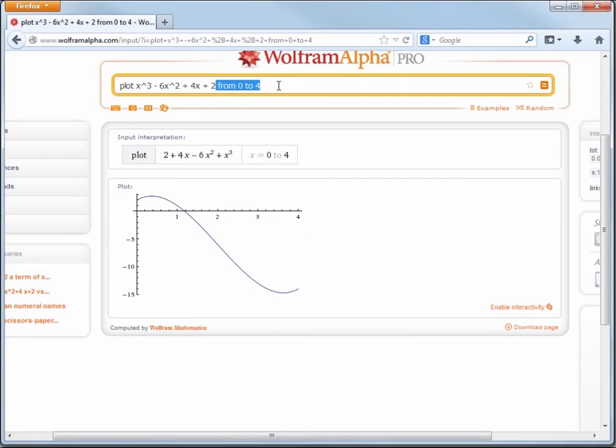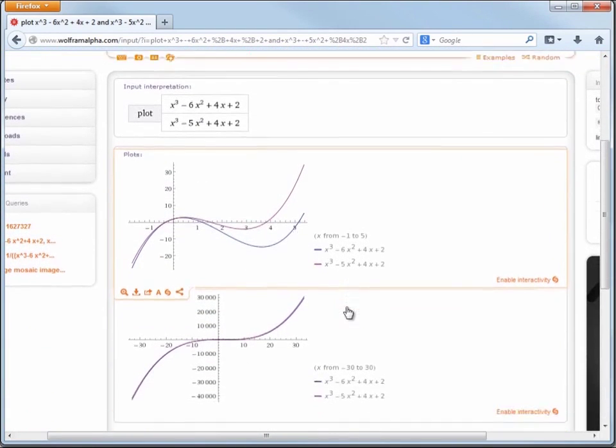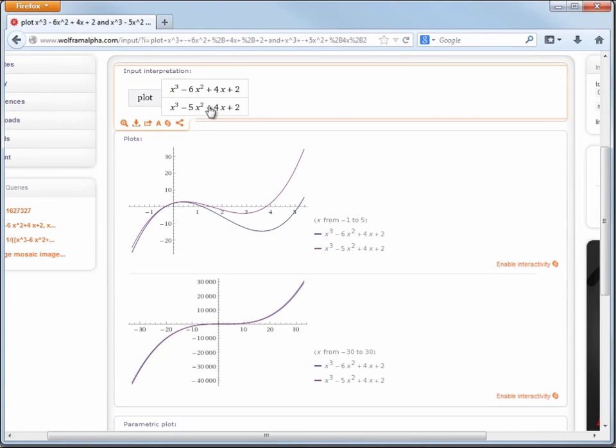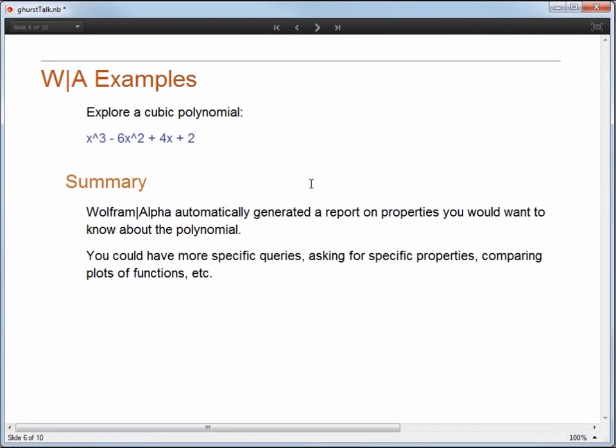Or let's say we wanted to compare the plots of two functions. So let's choose the same polynomial and a slightly modified one. We're going to change the quadratic term to minus five. Now we're provided with a plot of both. So now we can see if we modify this cubic polynomial by just a bit, how much it actually changes. So in summary here, WolframAlpha automatically generated a report on the properties that we would want to know about this polynomial. But it's okay to drill down and ask for more specific queries such as to plot or compare plots or any other properties. Okay, so that's WolframAlpha.